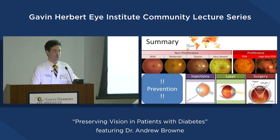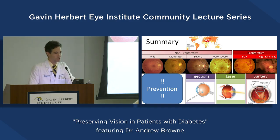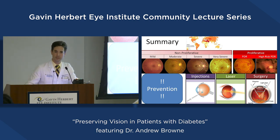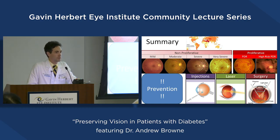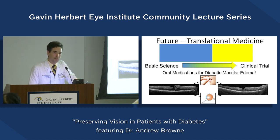In summary, diabetes affects many people throughout the world as a multisystemic disease with many stages that can cause permanent vision loss. There are several treatment options: injections, lasers, and surgery. But we should always be talking about prevention — controlling blood sugar and blood pressure is the sight-saving treatment. The future of diabetic retinopathy is through translational medicine.